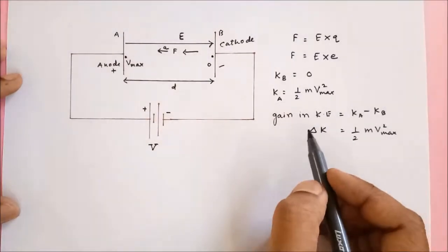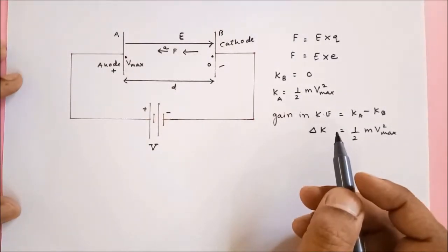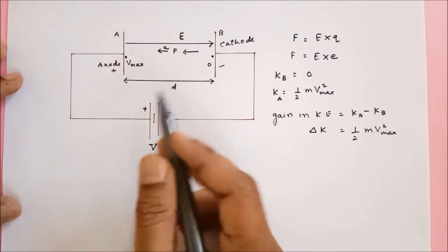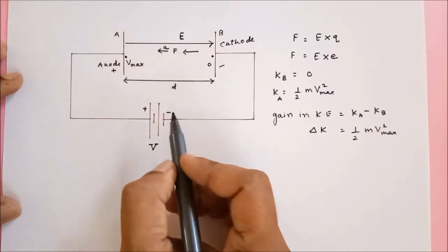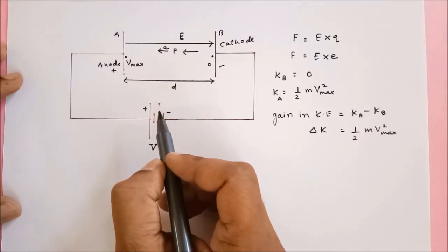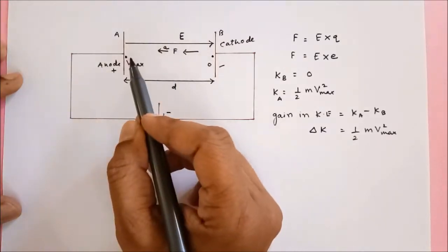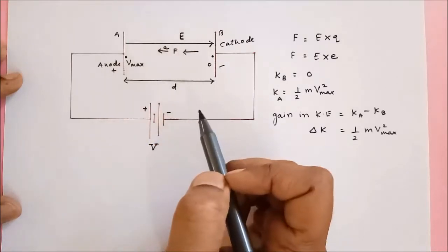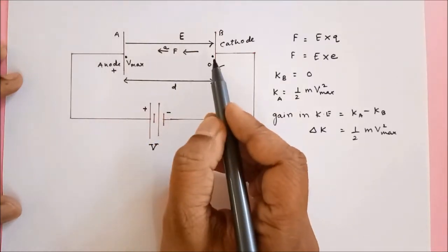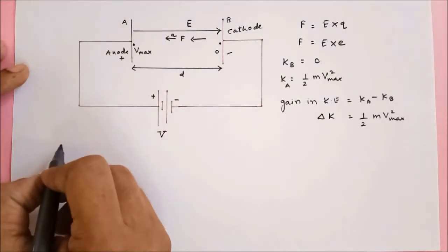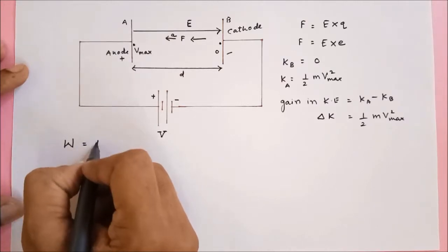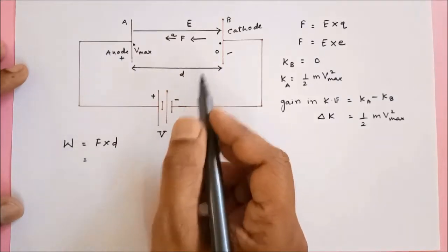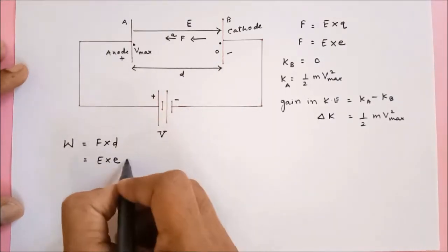Now, if this electron gains kinetic energy, from where has it gained that energy? As per the law of conservation of energy, somebody must have lost this much amount of energy. The battery actually does some work in bringing this electron from here to here. Because who exerts this force? The battery is responsible for creating this electric field and creating this force. So this battery is going to do some work W. The work done by the battery is equal to force multiplied by the displacement.